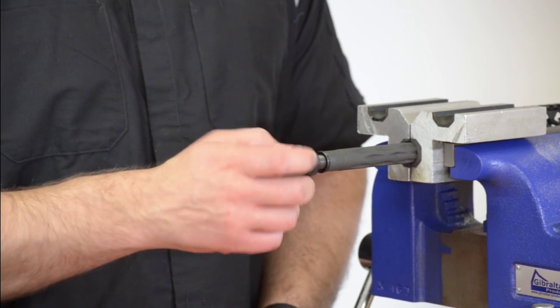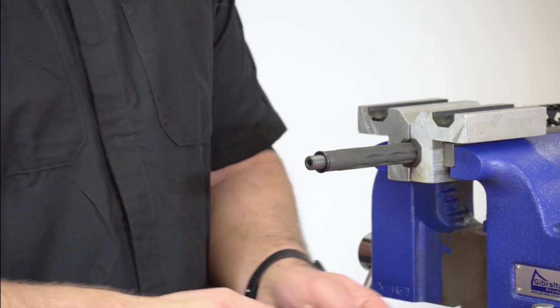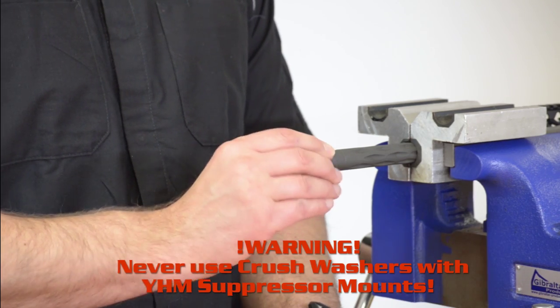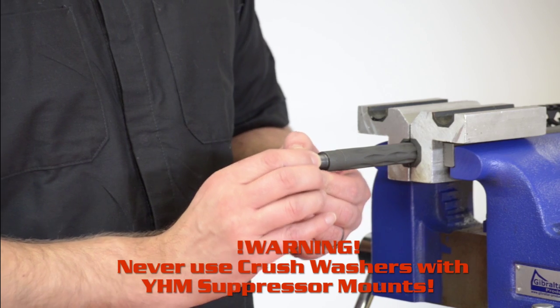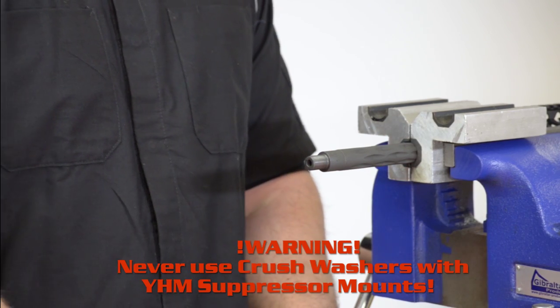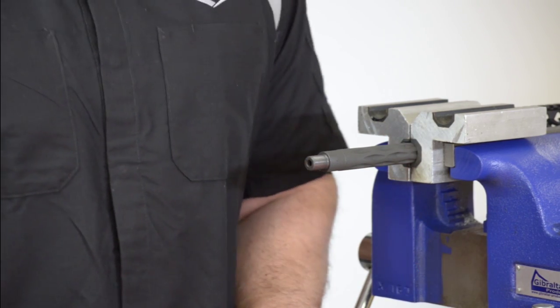Be sure to remove the crush washer. With YHM QD mounts, don't ever use a crush washer, lock washer, or peel washer. These can cause misalignment that could lead to a baffle strike. Only use the shims that come with the mount.